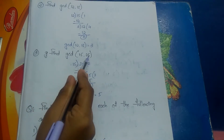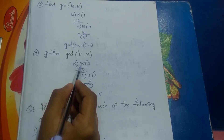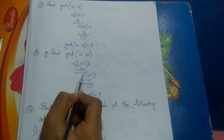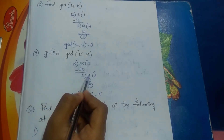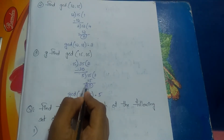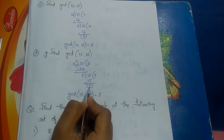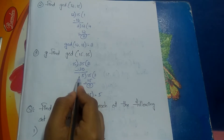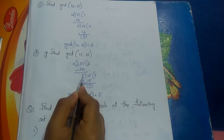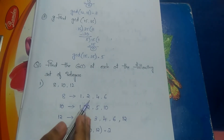Find gcd(15, 35). Divide 35 by 15: 15 × 2 = 30, remainder 5. Now divide 15 by 5: 5 × 3 = 15, remainder 0. We stop here. The divisor is 5, therefore gcd(15, 35) = 5.